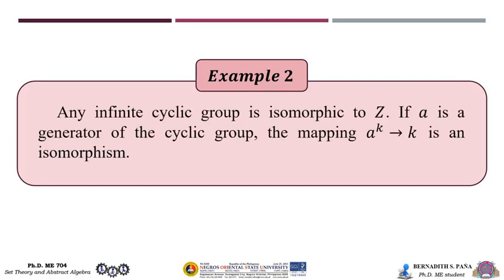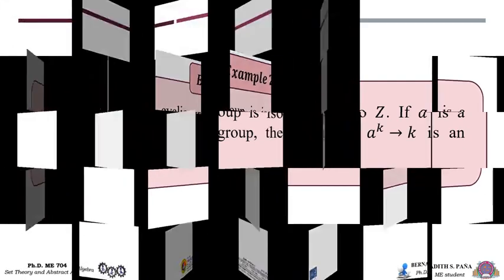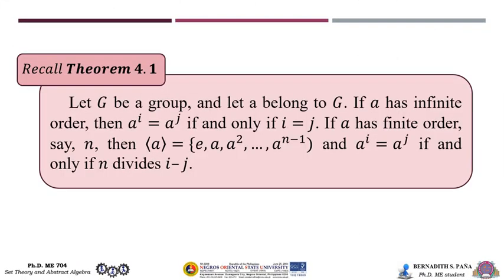For the next example, any infinite cyclic group is isomorphic to ℤ. If a is a generator of the cyclic group, the mapping a^k → k is an isomorphism. To prove this, let us first recall Theorem 4.1: let G be a group and let a belong to G. If a has infinite order, then a^i = a^j if and only if i = j.